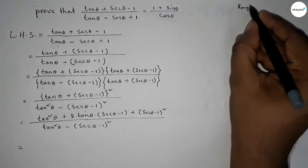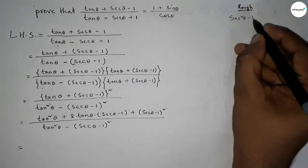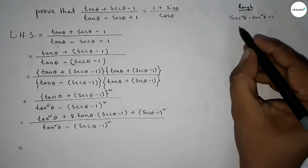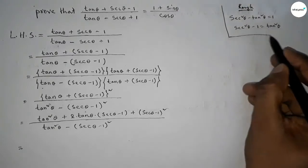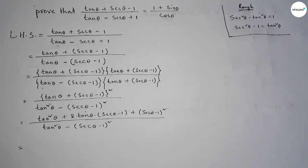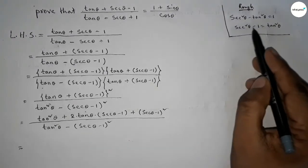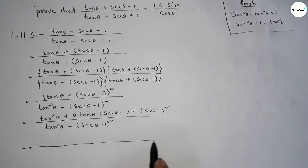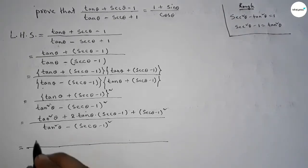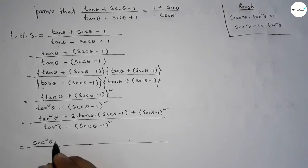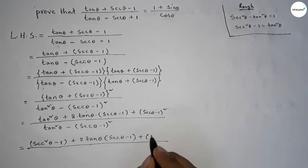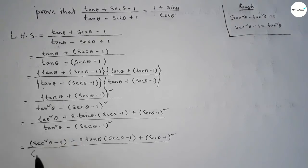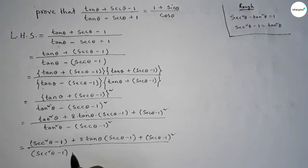Now, discussing the formula: we know that sec²θ - tan²θ = 1, so sec²θ - 1 = tan²θ. We can replace tan²θ with sec²θ - 1. So in the numerator, write sec²θ - 1 in place of tan²θ, and similarly in the denominator, write sec²θ - 1.